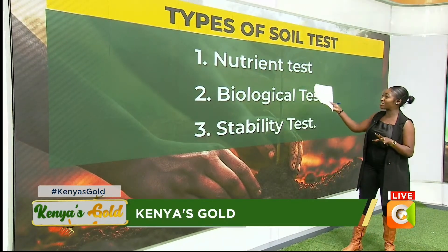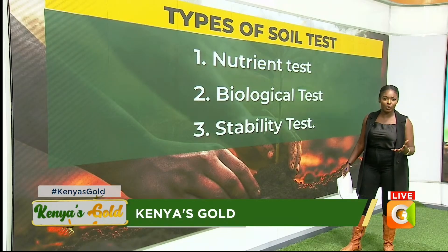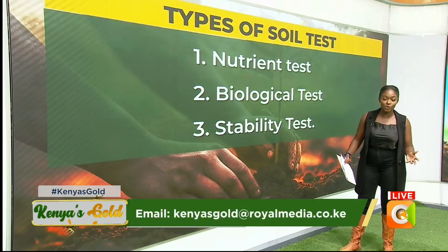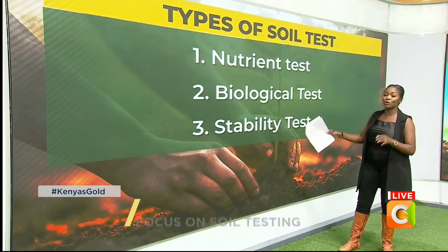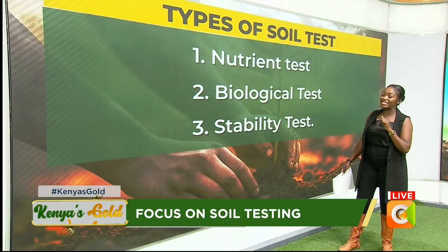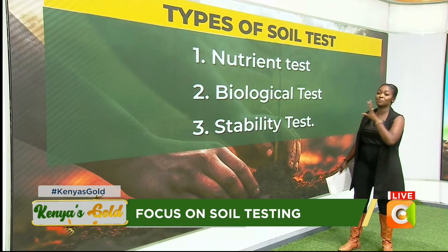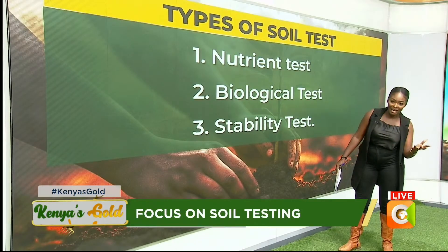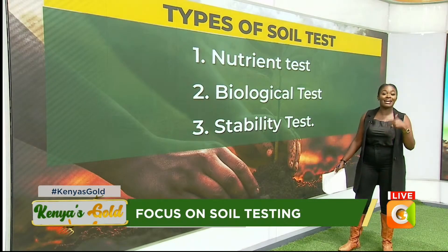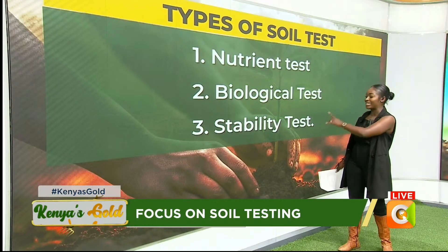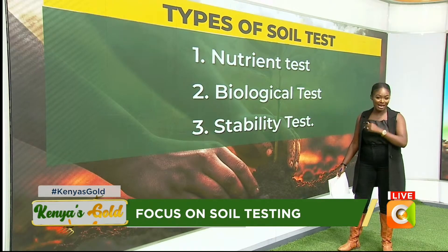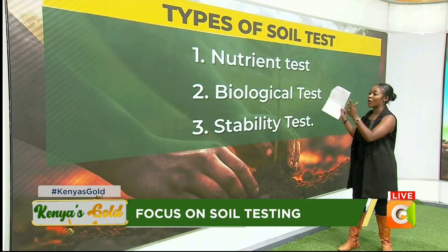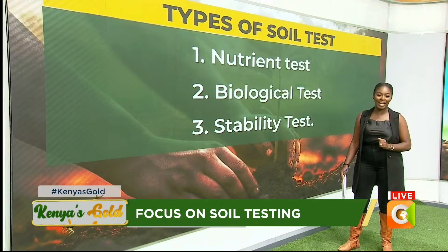Today we are identifying three different types of soil tests. The first is one we commonly do even at home — it works well in soil that is less acidic and also tests the pH. We also have the biological test, which we will be getting into in this second part of the show — it helps you identify if your soil is alive or not. Finally, there is the stability test, which monitors if your soil has resistance to soil erosion.